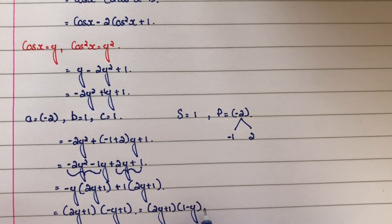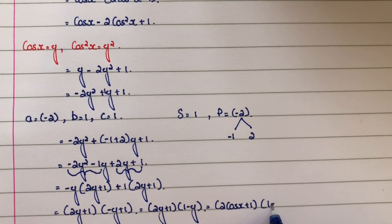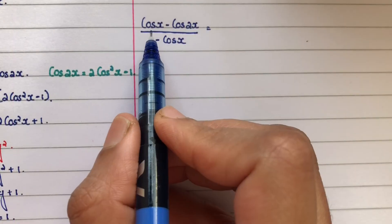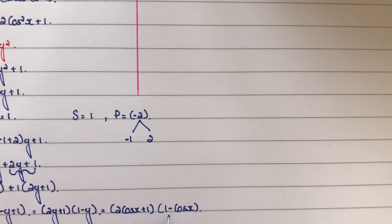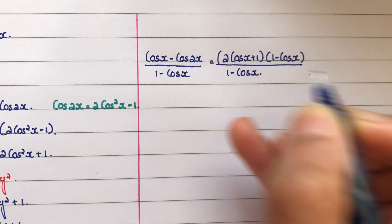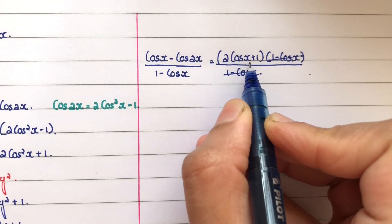Now resubstituting y equals cos x, the numerator becomes (2 cos x plus 1)(1 minus cos x). So cos x minus cos 2x equals (2 cos x plus 1)(1 minus cos x). Dividing by (1 minus cos x), the (1 minus cos x) terms cancel, leaving 2 cos x plus 1.